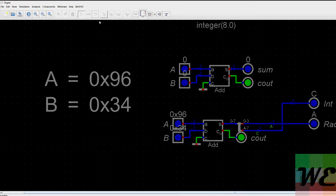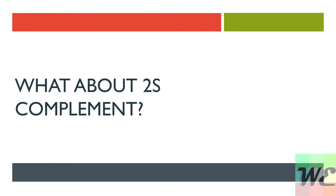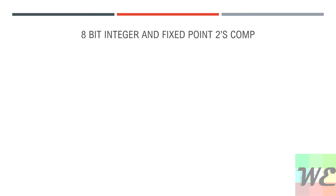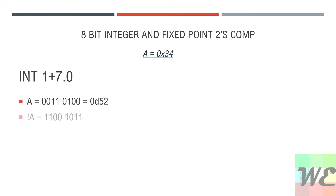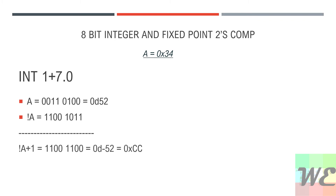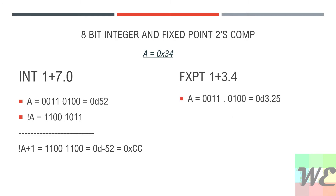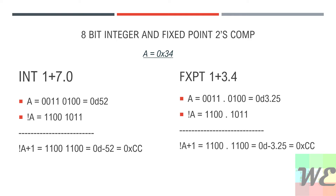Now we're going to look at 2's complement. We take A equal to 0x34 and perform 2's complement on that. In decimal that's 52. We invert and add 1 from the least significant bit, giving us negative 52 in decimal, which is 0xCC. Then we do the same thing in 1 plus 3.4 notation. In fixed-point 1 plus 3.4, A is 3.25. If we take NOT A and add 1 from the least significant bit, we get the same CC.